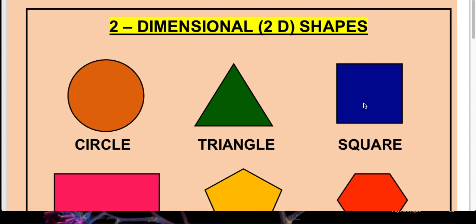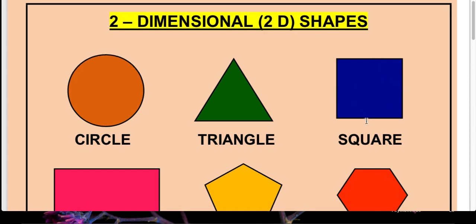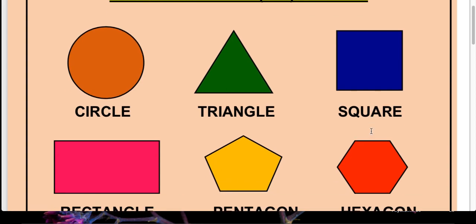Next, this is a square. Square is having four sides — one, two, three, four. And the special property of square is that all the sides of a square are equal. Square ke sare sides barabar hote hai.